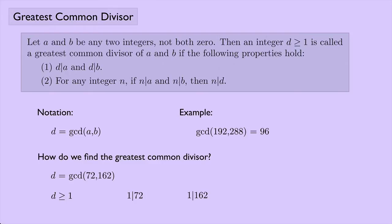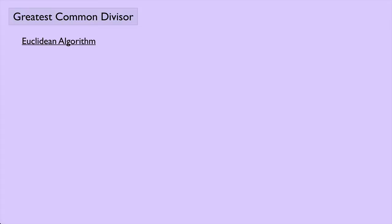Could we list out all of the positive divisors of 72 and 162 and then find the greatest common divisor? It turns out there's an easier way. There's something called the Euclidean algorithm — first I'll show you how it works, and then we'll talk about why it works.